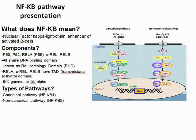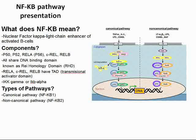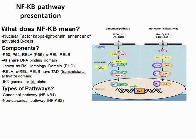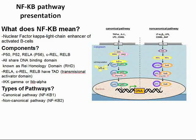REL-A, C-REL, and REL-B all have a TAD, which stands for Transcriptional Activator Domain. This activator allows gene expression to be changed. However, P50 and P52 do not have these TADs, so they cannot assist in gene expression unless they are paired with a protein containing a TAD. This is one way the cell can control the immune response.